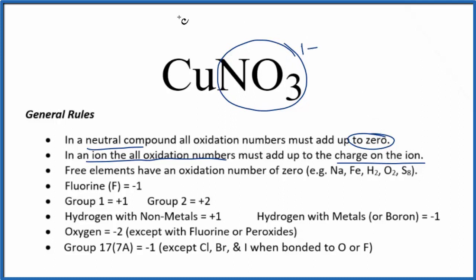Since we said everything has to add up to zero, that means the copper has to be plus 1. So the oxidation number on the copper is plus 1, and that's why we're calling it copper 1 nitrate.